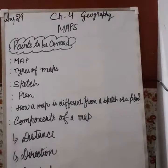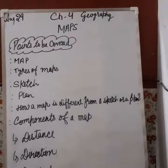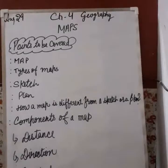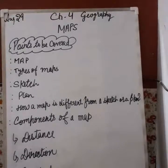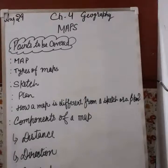We have now understood the need for maps and the different types of maps. Let us now look at the components of a map — what makes a map a map and the scientific reasoning behind it. There are three components: distance, direction and symbols. Maps are drawings which reduce the entire world or a part of it to fit on a sheet of paper. This reduction is done very carefully so that the distance between places is accurate.